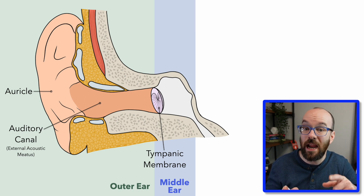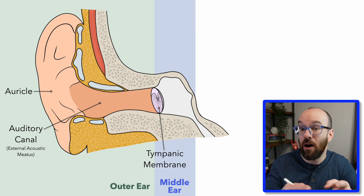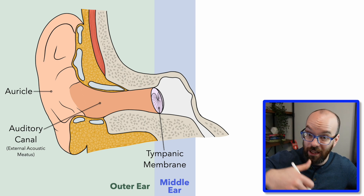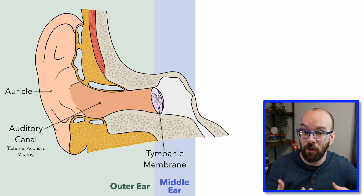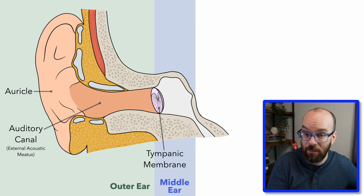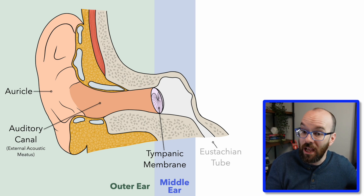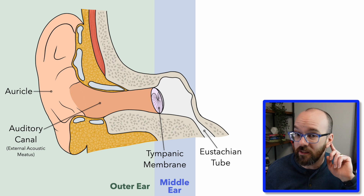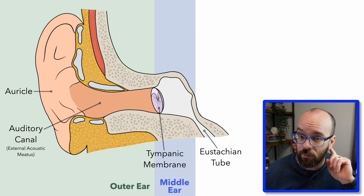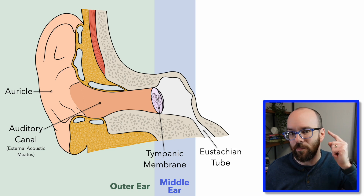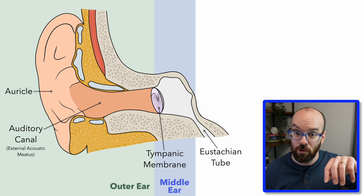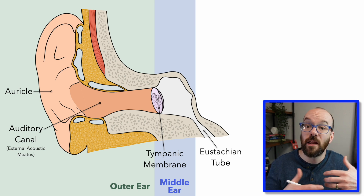We need a way to get air particles out of the middle ear — or, if you're going down in elevation, get air particles back in. For that we have a structure called the eustachian tube. The eustachian tube is connected to the back of your throat, so air can pass from the middle ear to your throat where it can equalize that pressure.